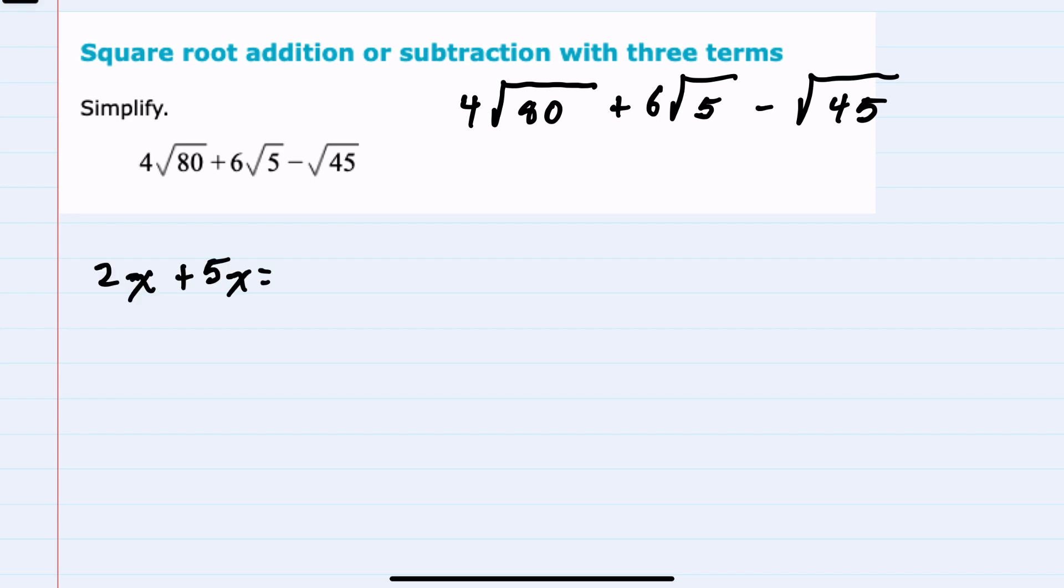Similar to how we can add 2x + 5x and get 7x, for radicals, if we had 2√3 + 5√3, we can also add those together and get 7√3. But it's important in these examples that either the variables are exactly the same or the radicals are exactly the same in order to add them.